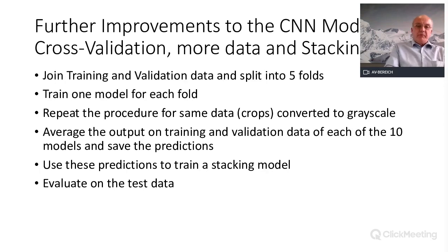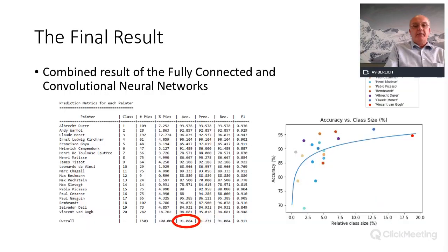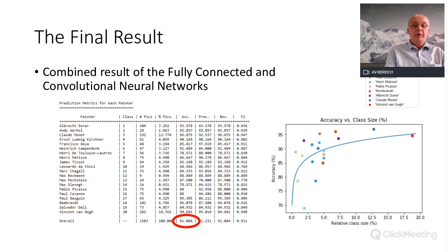In addition, using cross-validation means joining the training and validation sets and creating five different folds, training one model per fold. Replacing simple averaging with a stacking model — as done with the fully connected networks — and combining the two different model types with all these improvements, you reach an accuracy of 91.84%, which I think is really pretty good.